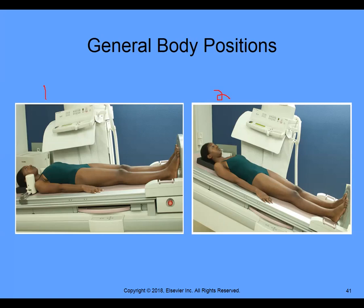Picture two has the head higher than the feet — this is Fowler's position. Number one is Trendelenburg, number two is Fowler's. Remember, we may not have fancy equipment to tilt the table, but these positions can be achieved by placing pillows underneath the feet to raise them higher than the head, or pillows and blankets to elevate the head higher than the feet.